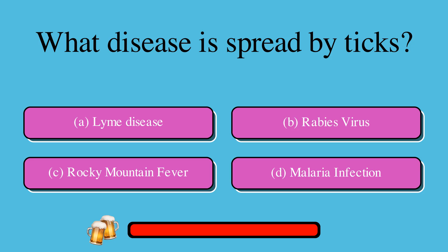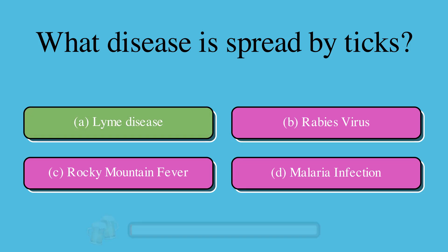What disease is spread by ticks? A. Lyme disease, B. Rabies virus, C. Rocky Mountain fever, or D. Malaria infection. The correct answer is A. Lyme disease.